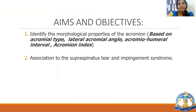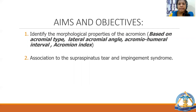The aims and objectives of the study were to identify the morphological properties of the acromion, which was based on acromion type, lateral acromion angle, acromial humeral interval, and acromial index, and their association to supraspinatus tear and impingement syndrome.